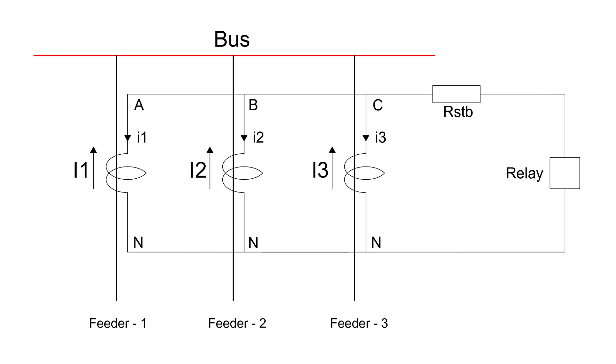Let's assume that high impedance differential protection is used to protect a bus bar as shown in the diagram on the screen. In this protection scheme, all the CTs are connected in parallel and then the four wires A, B, C and N are connected to the relay.